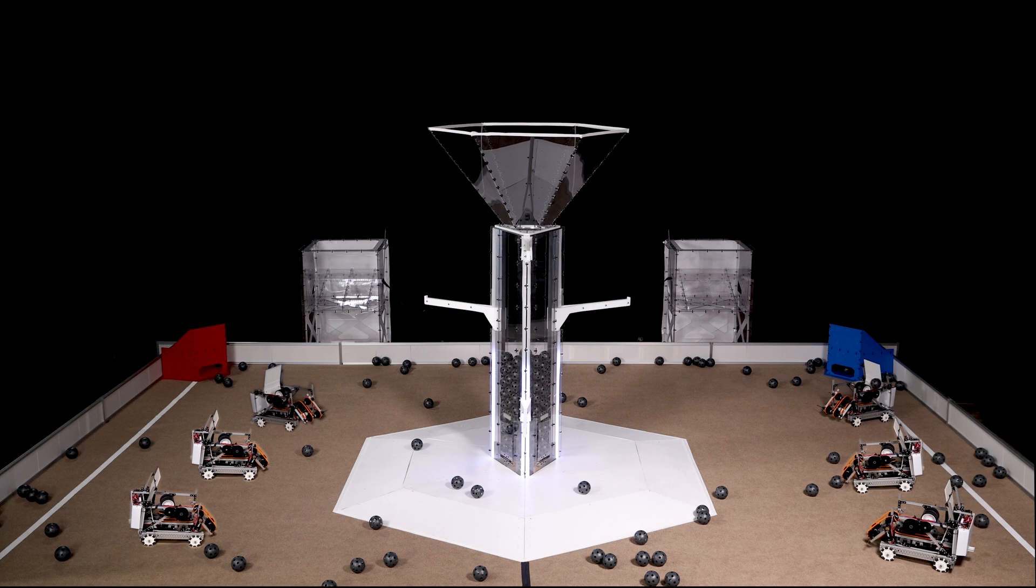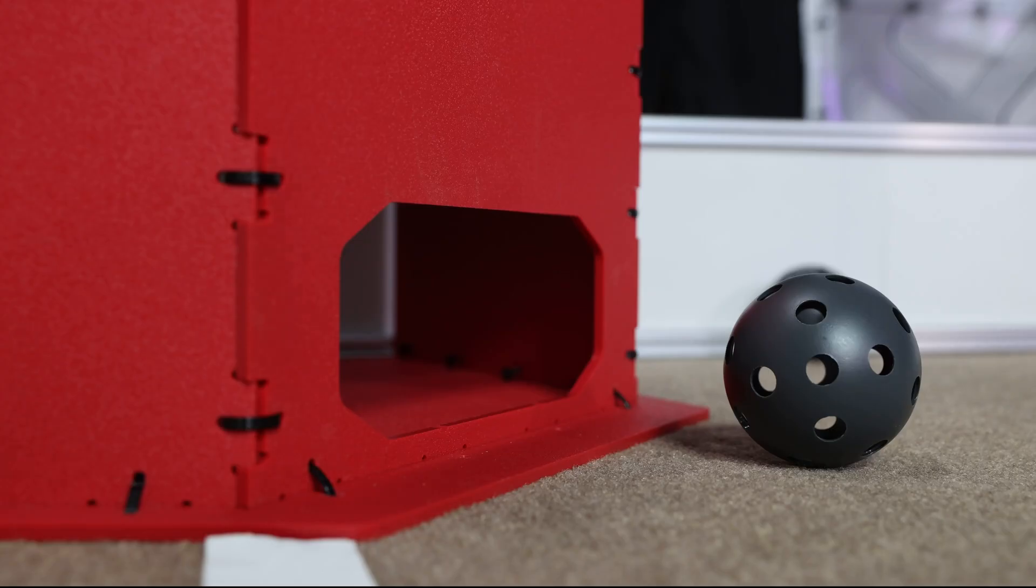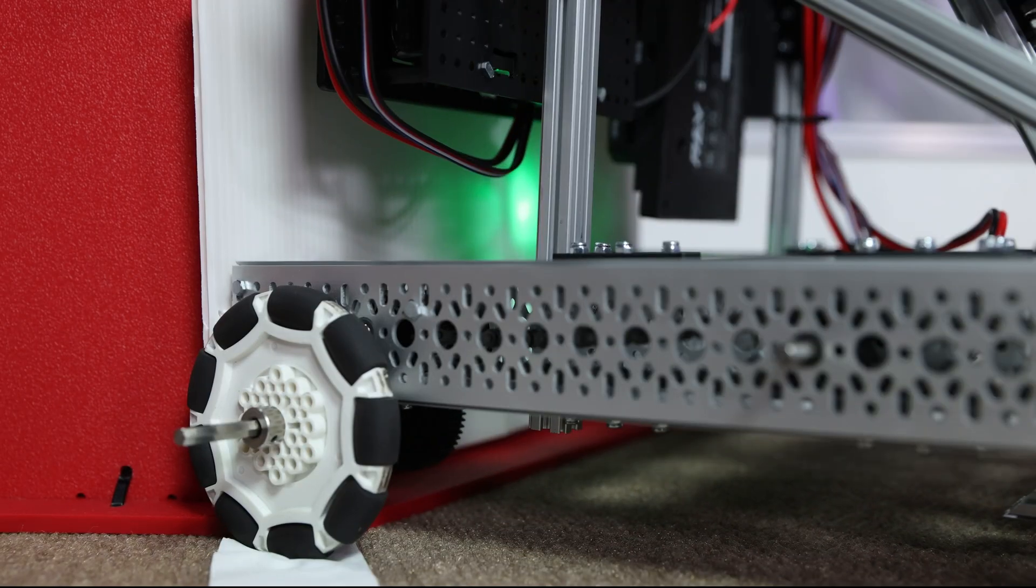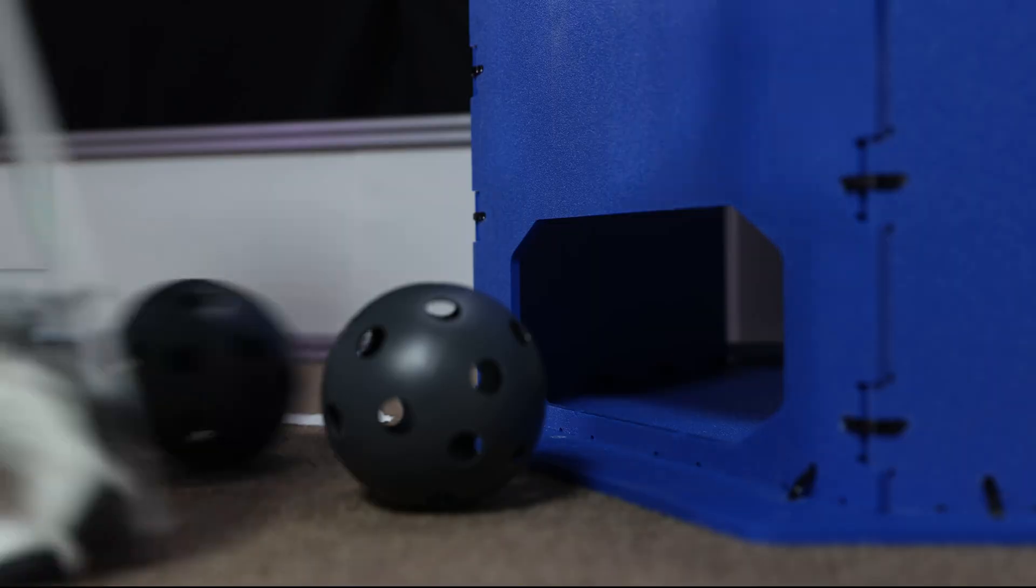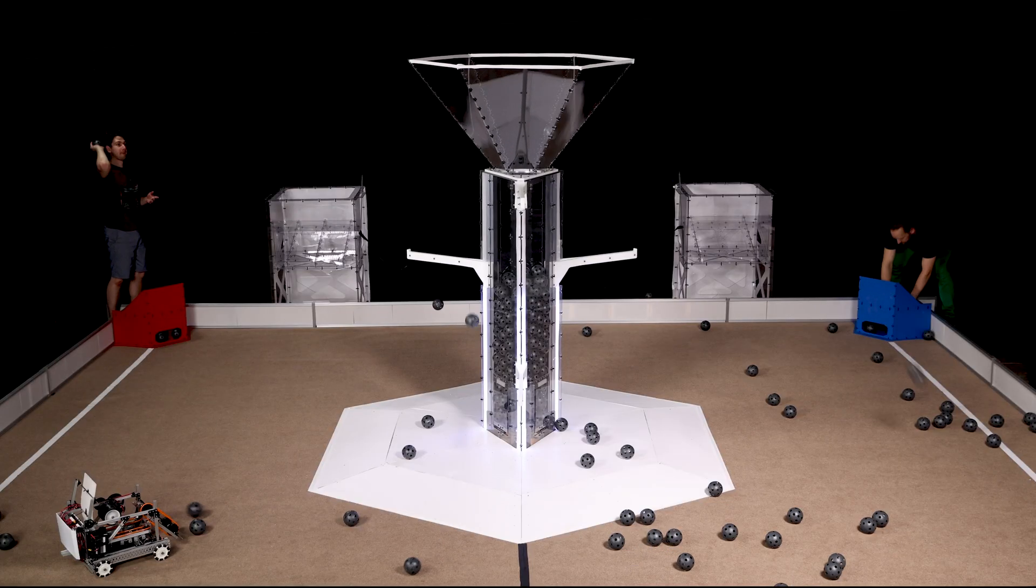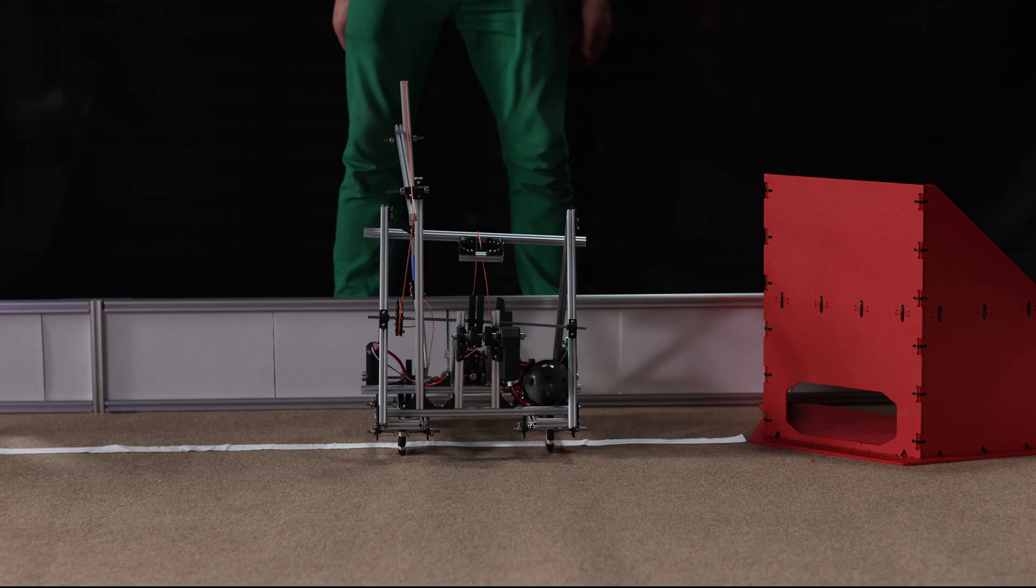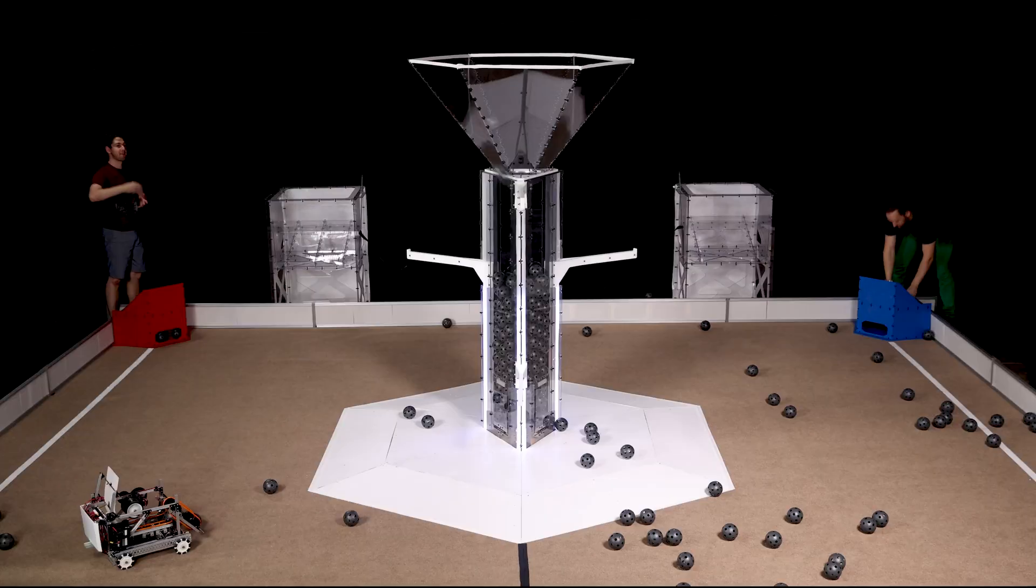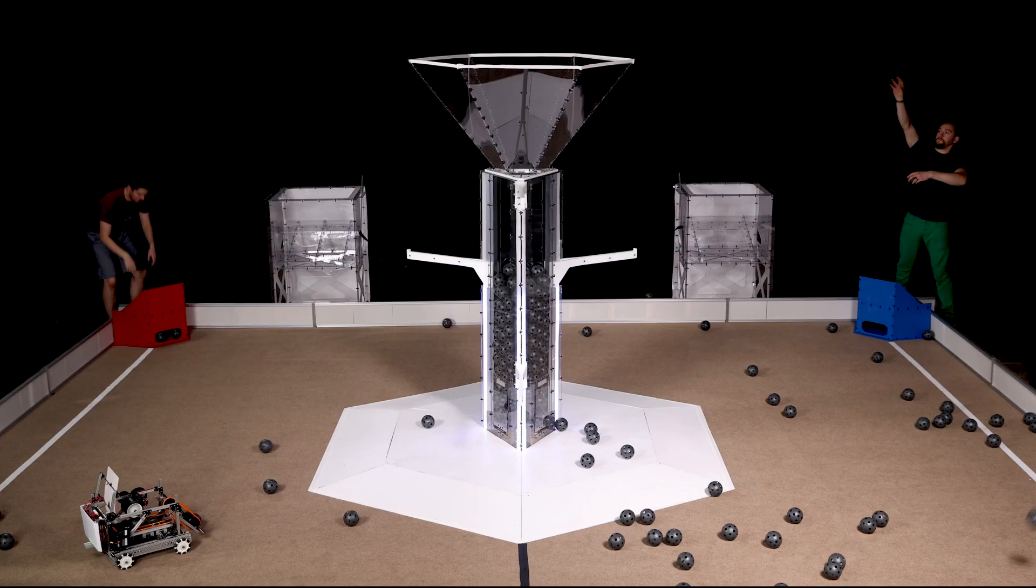Robots can store the carbon directly in the sink, or can maneuver carbon into one of the compressors located in the corners of the playing field in order to compress it for transport to the sink. Once in the compressor, human players can remove the carbon and either place it into a robot, which then stores it, or can directly store it themselves.